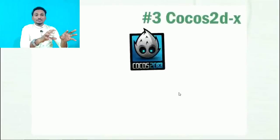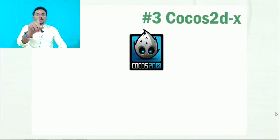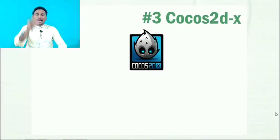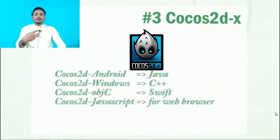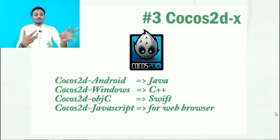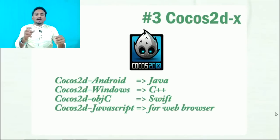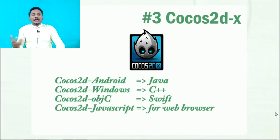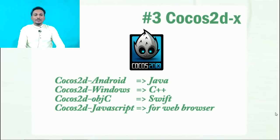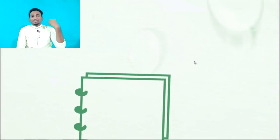For example, Star Citizen is a game that has been developed with the help of Lumberyard. The third game engine is Cocos 2D-x. It's open source and suited for 2D game development. This engine can be your first choice. They support Java for Windows Phone, C++, JavaScript for browser development, and Swift for Apple platforms.